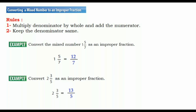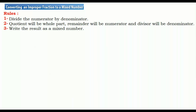Now let's talk about converting an improper fraction to a mixed number. The rule is: first, divide the numerator by the denominator. After dividing, the quotient will be the whole part, the remainder will be the numerator, and the divisor will be the denominator. Then write the result as a mixed number.